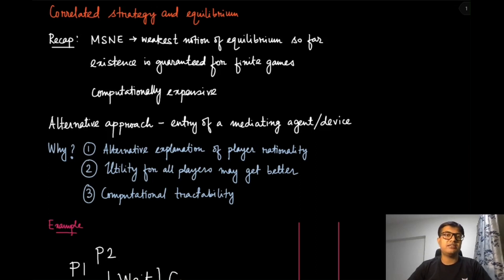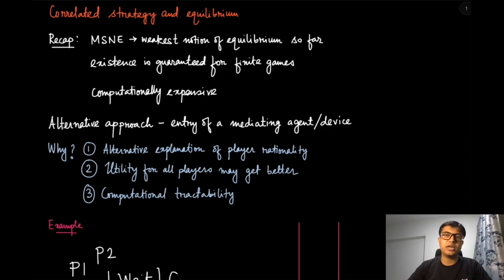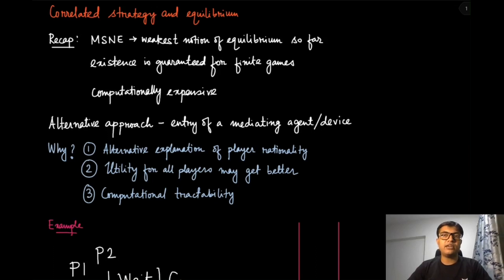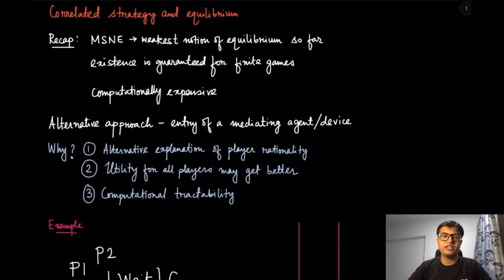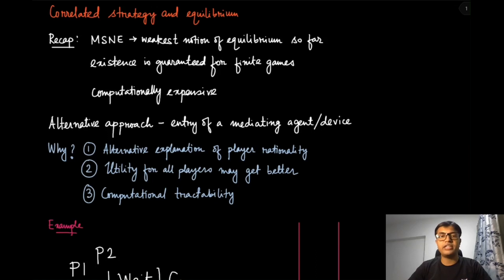Sometimes friends might decide together that they will go to watch a football match today and a cricket match tomorrow. They do not take independent decisions and end up in a situation where one is watching cricket and the other is watching football. In some sense they can coordinate, and if they are not able to decide which game to watch, they can just toss a coin and decide based on that outcome.